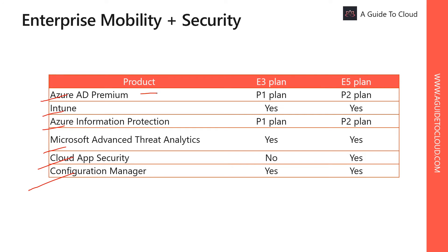Azure AD Premium is the central identity store used for your applications in EMS and Microsoft 365. Azure AD Premium P1 and P2 includes things like self-service password reset writeback from Azure AD to your on-premises Active Directory, Microsoft Azure Multi-Factor Authentication, and conditional access based on group, sign-in risk, or user risk.